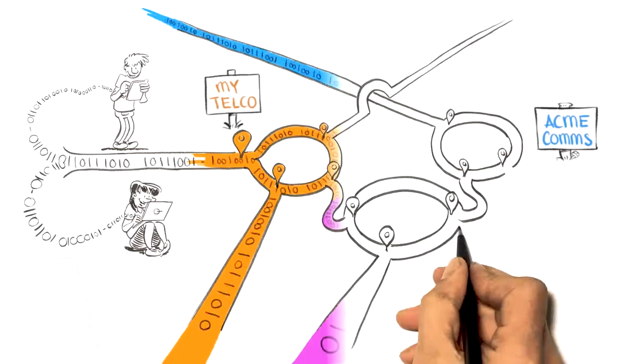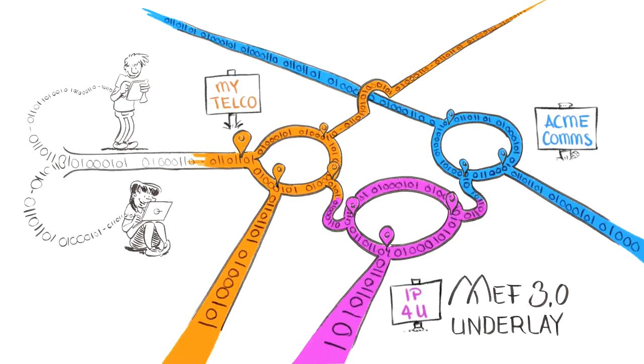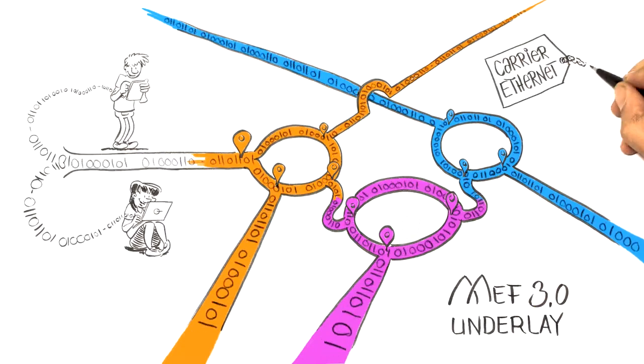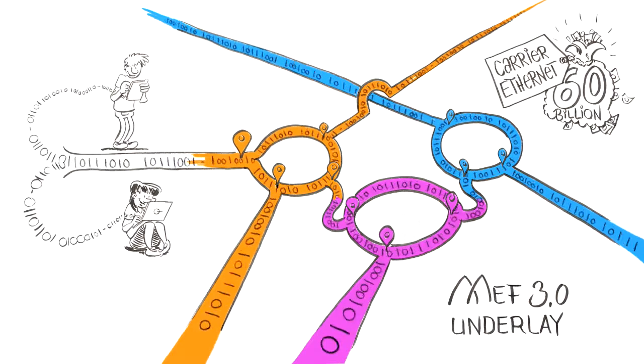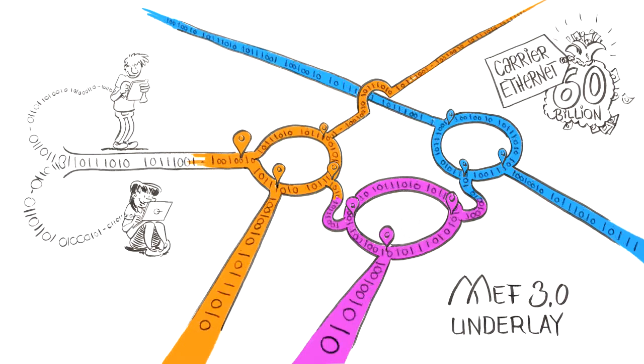The pinnacle of these networks uses MEF 3.0 standardized underlay connectivity services. Carrier Ethernet services alone are now a 60 plus billion US dollar market. Along with MEF 3.0 optical transport and IP services, providers have technology agnostic services with great flexibility.